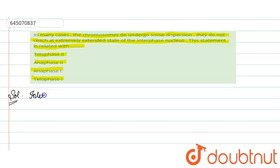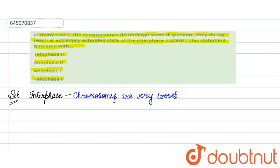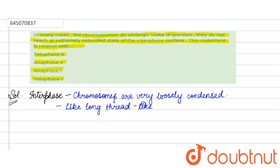The chromosomes do undergo some dispersion but do not reach the extremely extended state, meaning they are not as loosely packed as compared to the interphase nucleus. During interphase, the chromosomes are very loosely condensed — they are present as long thread-like structures. So chromosomes are long thread-like structures during interphase; they are very loosely condensed.